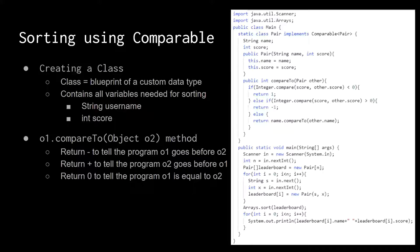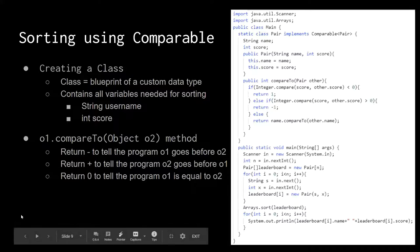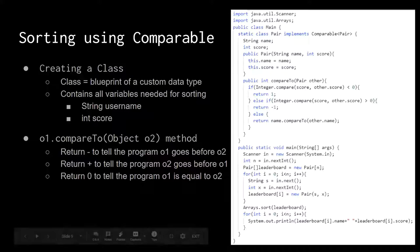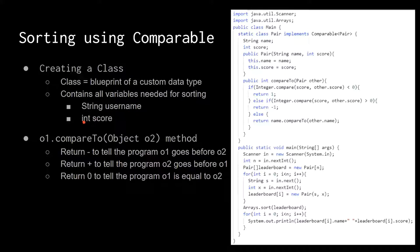In certain situations, you want to create your own data type. You want to store more than just an int or a string — you want to store both an int and a string, and you want them to be linked to each other. This is when a class will be useful. The class will contain all the variables that you need for sorting — in this case, a username and a score.